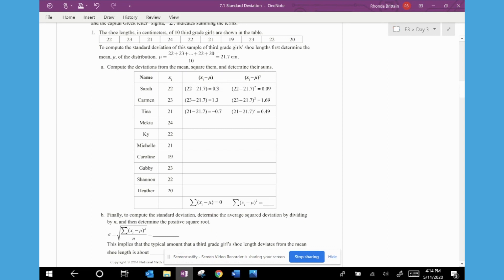So by this being a positive number, it means that she actually is above the mean. So the positive 0.3 means her data value is higher than the mean. And for Carmen, her data value also is higher than the mean. And then for Tina, 21 minus 21.7 is a negative number. So Tina is below the mean. So when we look at the remaining girls, we have 24 minus 21.7, and that's going to end up giving us a deviation of 2.3.